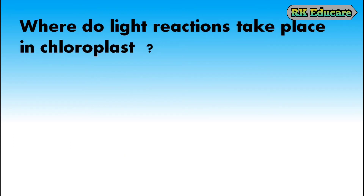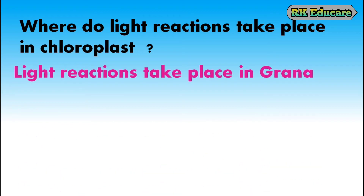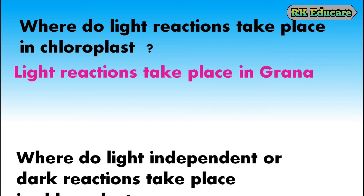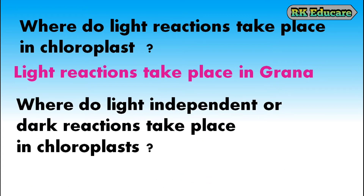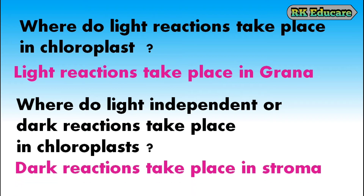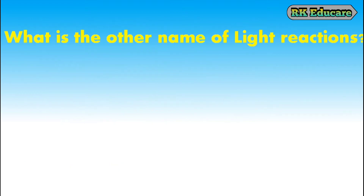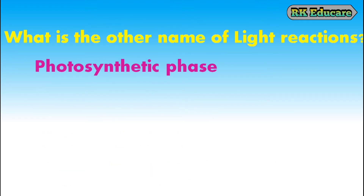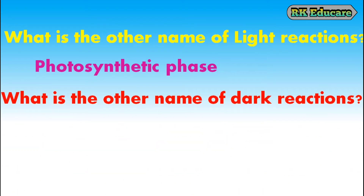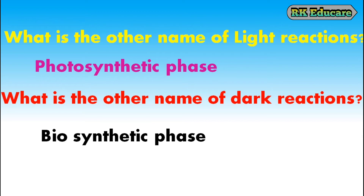Where do light reactions take place in chloroplasts? Light reactions take place in the granum of the chloroplasts. Where do light-independent or dark reactions take place? Dark reactions take place in the stroma of the chloroplasts. What is the other name of light reactions? Photosynthetic phase is the other name of light reactions. What is the other name of dark reactions? Biosynthetic phase is the other name of dark reactions.